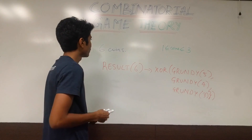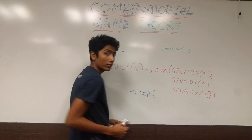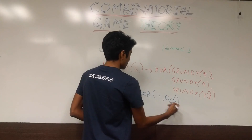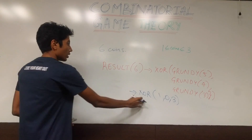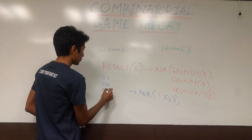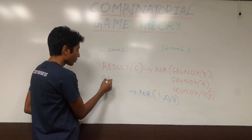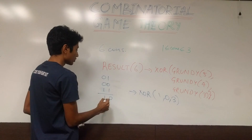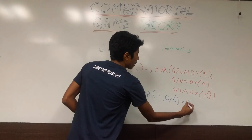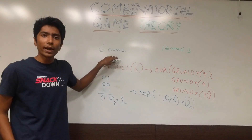Last time we discussed that Grundy(5) = 1, Grundy(4) = 0, and Grundy(3) = 3. In binary: 01, 00, and 11. XOR operation: even number of 1s gives 0, odd gives 1. We get 2 ones in one column giving 0, and a single 1 giving 1 — result is 2 in decimal. Since this is non-zero, you are winning with 6 coins on your turn.